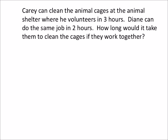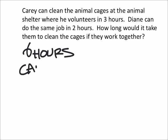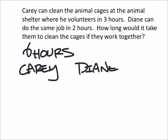On this one, what I'm going to do is consider how long it would take them to do the job by themselves in six hours. The reason I'm using six hours is because they can complete a certain number of jobs in six hours each. We've got Carrie and then we've also got Diane. If we added them together, we'd have five.